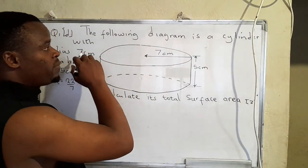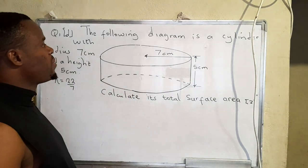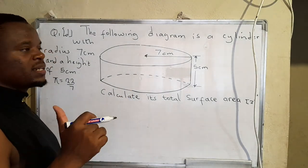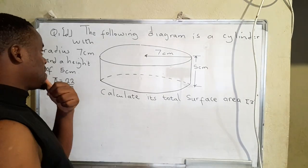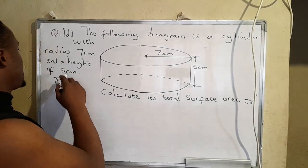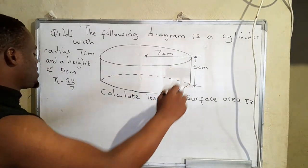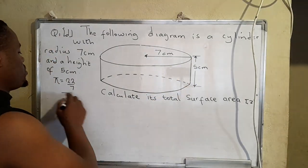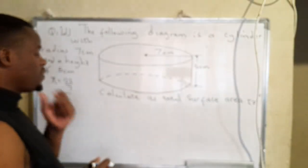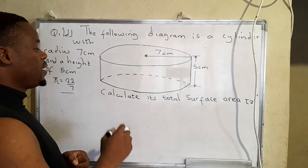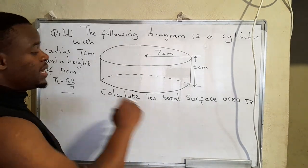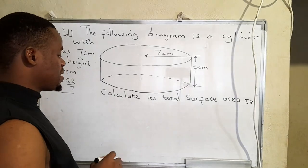So the problem reads the following diagram is a cylinder with radius, that's the radius which is 7 centimeters and the height of 5 centimeters. You should take pi as 22 over 7.